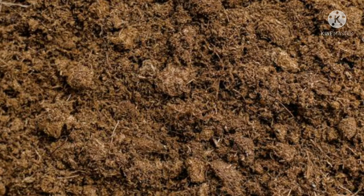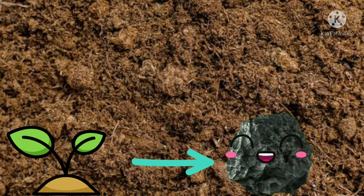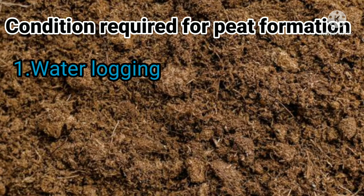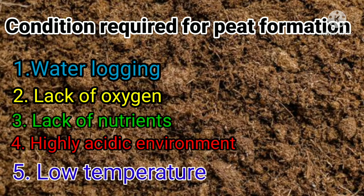Peat is nothing but a dark fibrous content which is formed after decomposition of plants and animals. But it is not really full decomposition — it is formed when decomposition fails to keep pace with organic matter. It is the first stage of converting plant material into coal. There are specific conditions for peat formation: water logging, lack of oxygen, lack of nutrients, and a highly acidic plus low temperature environment.